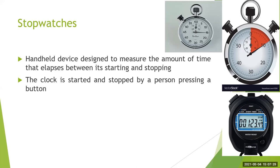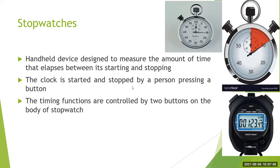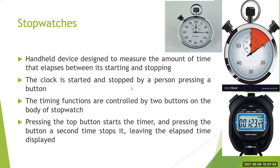You press one button and the stopwatch starts. When you want to stop it, you press the button again and it stops. The timing functions are controlled by two buttons on the body of the stopwatch — one to start and stop, and one for resetting. Pressing the top button starts the timer; pressing it a second time stops it, leaving the elapsed time displayed. Here we can see an analog stopwatch: starting from zero, if you stop at 10 seconds, you record that time. Pressing the reset button returns it to zero.